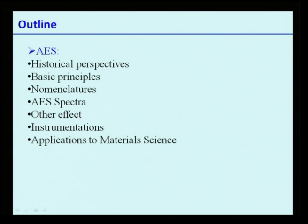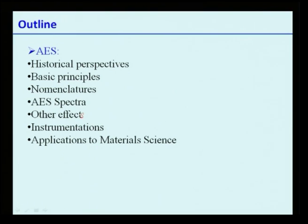The outline of this lecture series on AES is as follows. First, I will talk about some historical perspectives of Auger electron spectroscopy. Then I will discuss in detail the basic principles and nomenclatures used in AES. This will be followed by AES spectra — how they look, what information we can obtain — then other effects, instrumentation, and many examples to show how relevant this technique is for different applications in materials science.